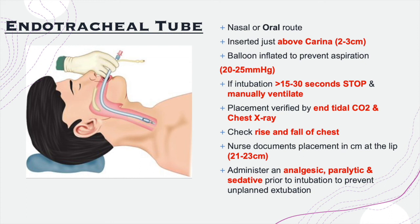The balloon of the endotracheal tube should be inflated to 20 to 25 millimeters of mercury to prevent aspiration. If the balloon is not inflated enough to fully occlude the trachea, aspirated material can pass the balloon and enter the lungs, causing aspiration pneumonia, which can lead to complications such as septic shock. If intubation is taking too long, the nurse should monitor saturation levels and stop the procedure to manually ventilate the patient and provide oxygen.